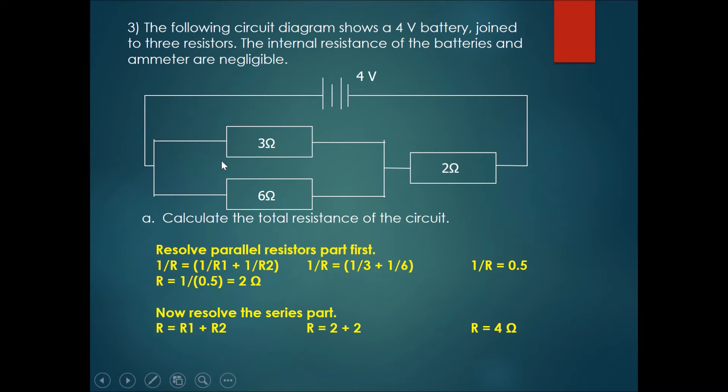So these two combine together and give you 2 ohms of resistance. Now because you have this combined resistor of 2 ohms and it is connected in series with this 2 ohm resistor, now we can resolve the series part.